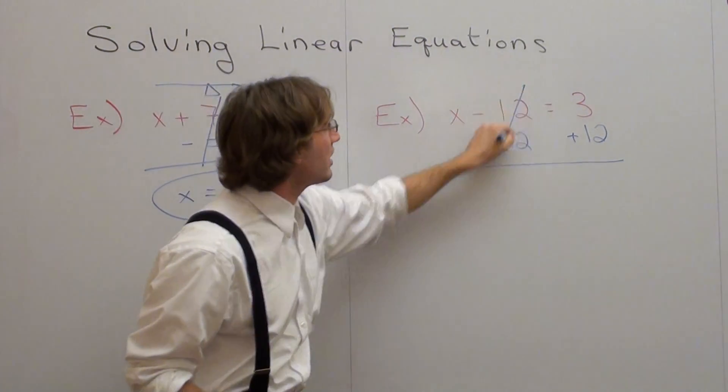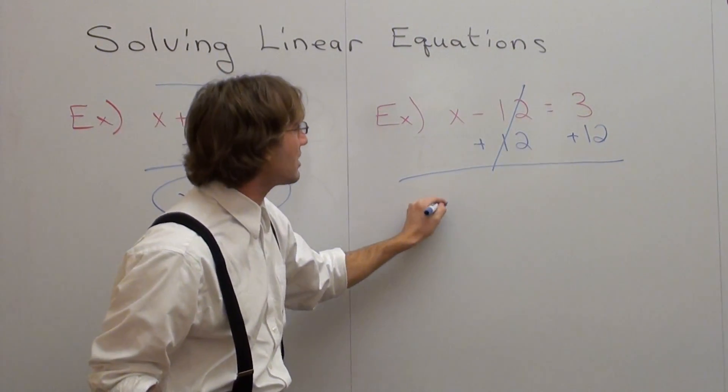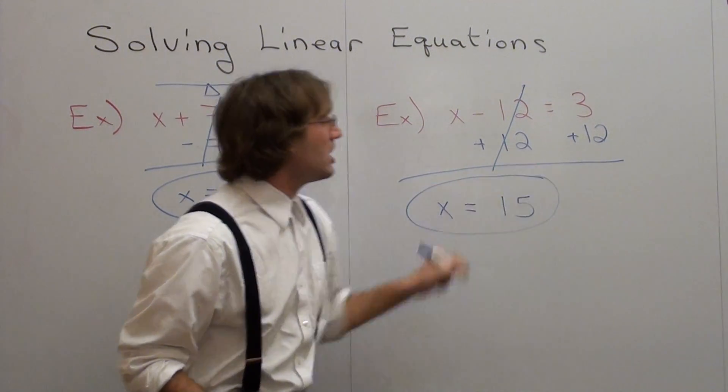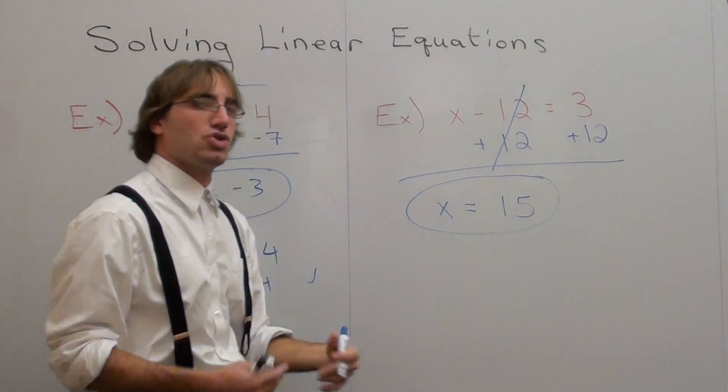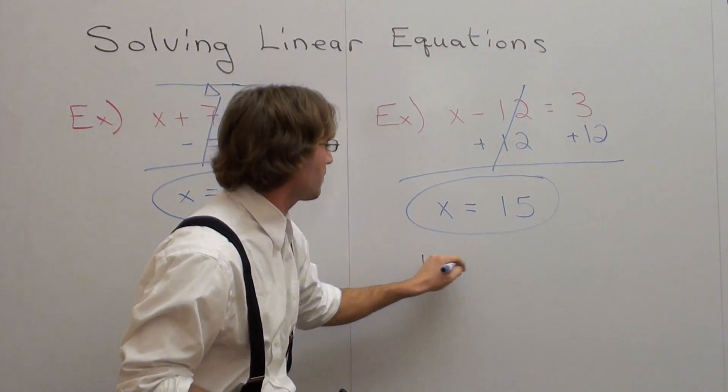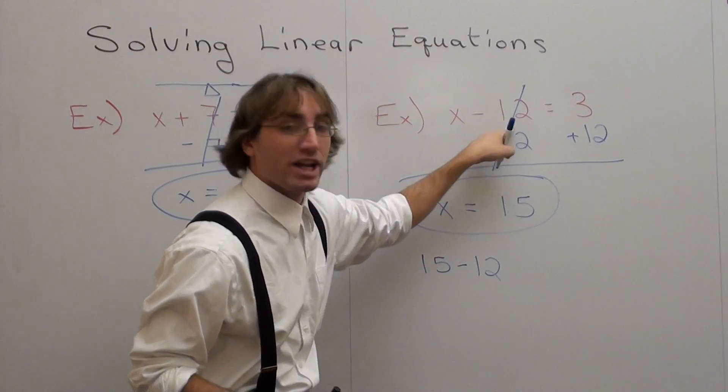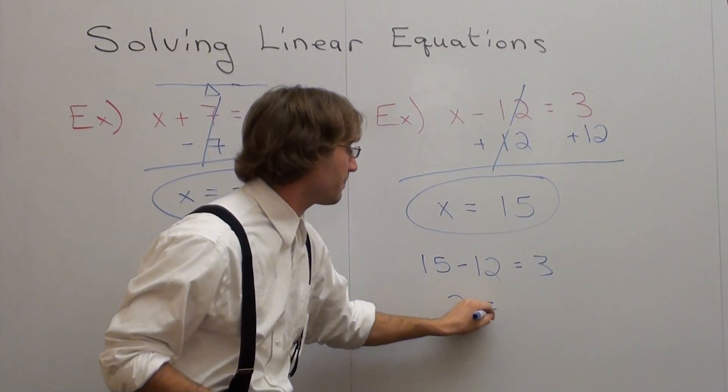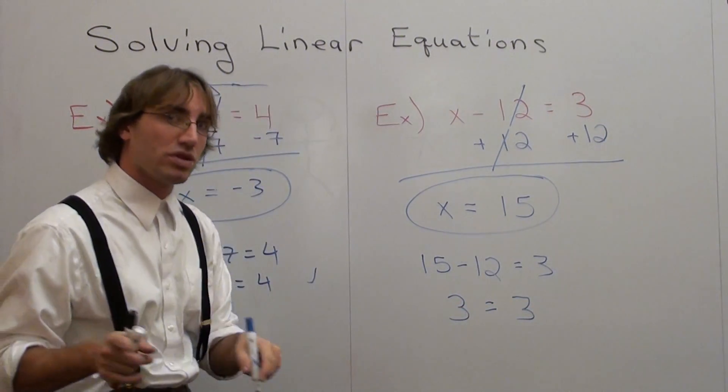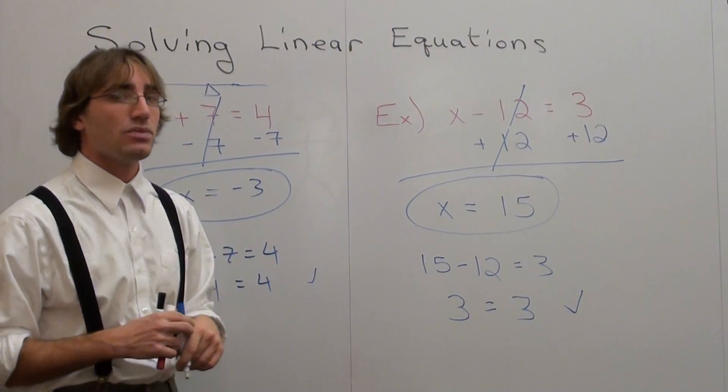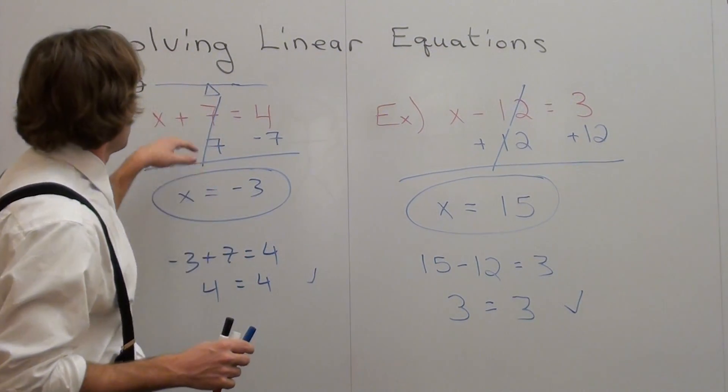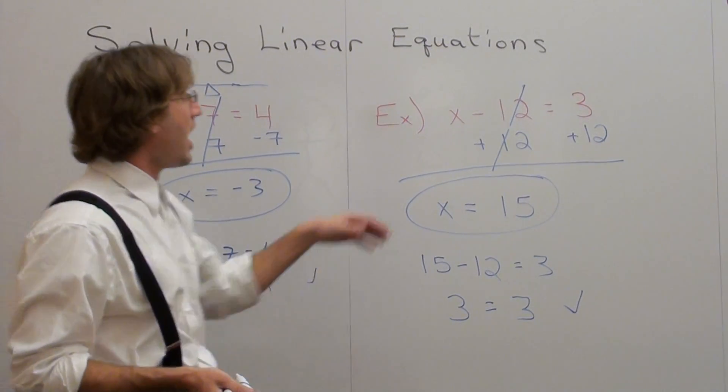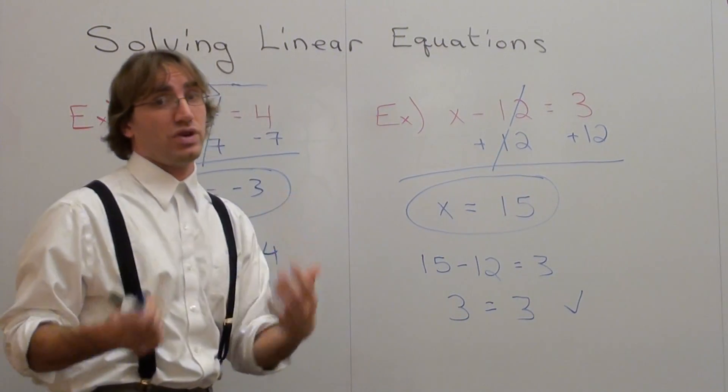Negative 12 plus 12 cancels, and I've got x equals 15. Check it out. Make sure the story rings true. I've got 15 subtract 12. What's 15 subtract 12? 3. 3 does equal 3. Story checks out. So we did a problem where you subtract it on both sides to figure out an x value or a variable. And we add it on both sides to figure out an x value.